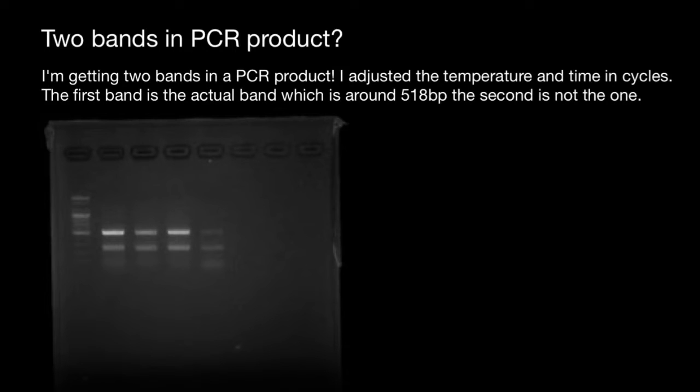Hello, and welcome to Nikolai's genetics lessons. Today we're going to talk about why sometimes when you run a gel, you can get unspecific bands. Instead of seeing only one band, you see two bands.